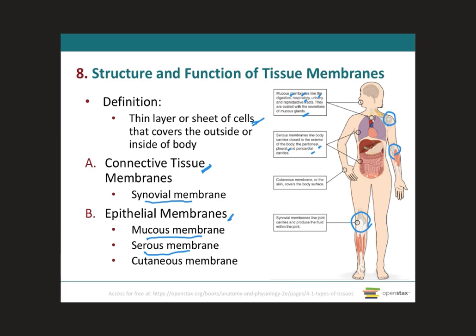The skin is a type of epithelial membrane also called the cutaneous membrane. It is a stratified squamous epithelial membrane that rests on top of connective tissue. The apical surface of this membrane is exposed to the external environment and is covered with dead keratinized cells that help protect the body from desiccation and from pathogens.